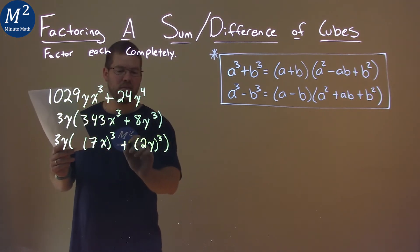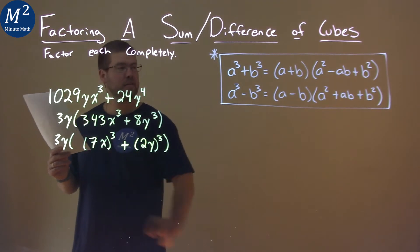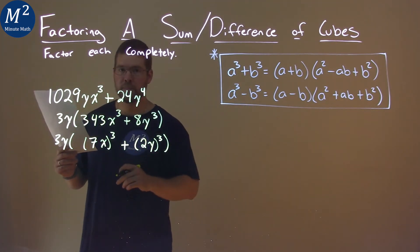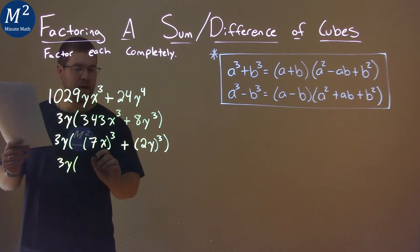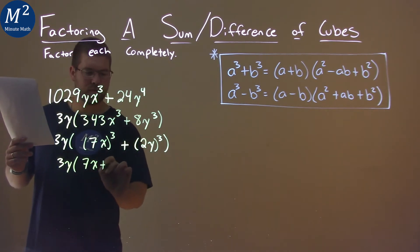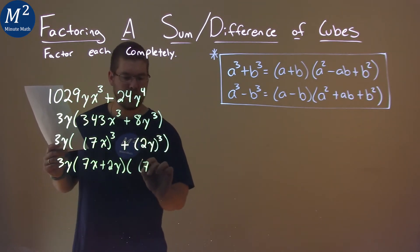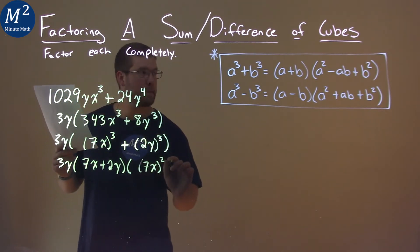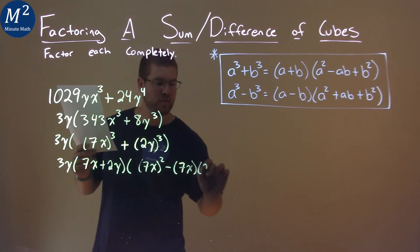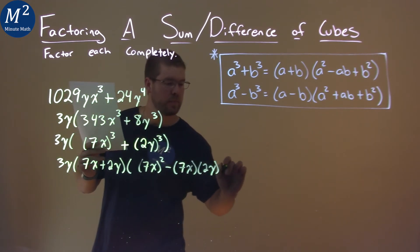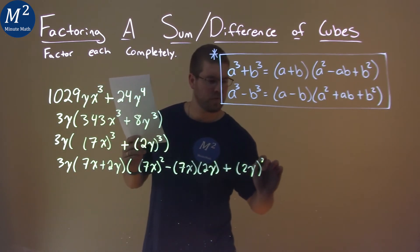We can now use this as the sum of two cubes formula. Our a value is going to be 7x and our b value is 2y. So we have 3y times (7x plus 2y) times (7x all squared minus 7x times 2y plus 2y all squared).